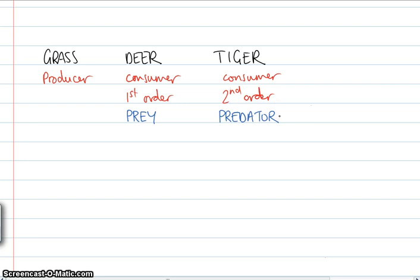Because the tiger hunts the deer. The deer tries to escape from the tiger. Okay. That is definitely it.